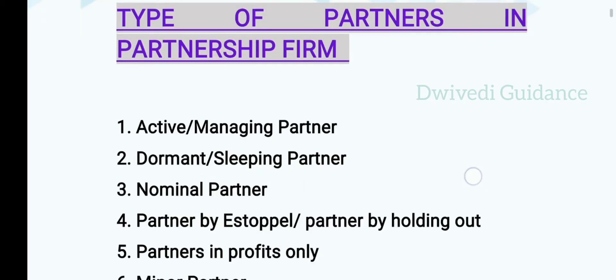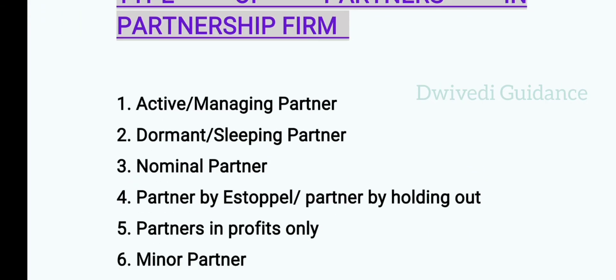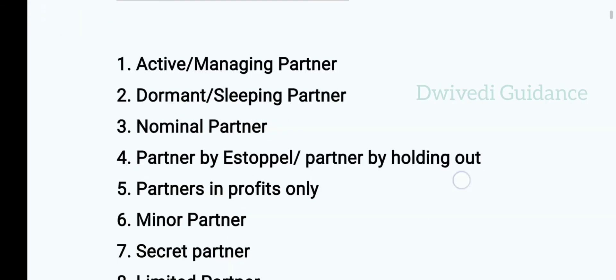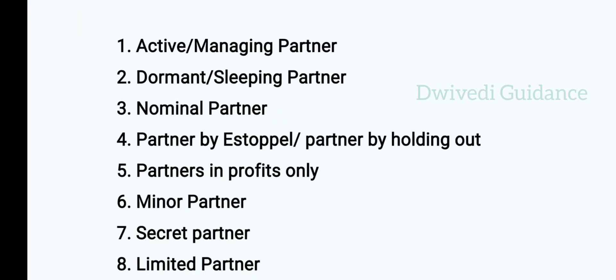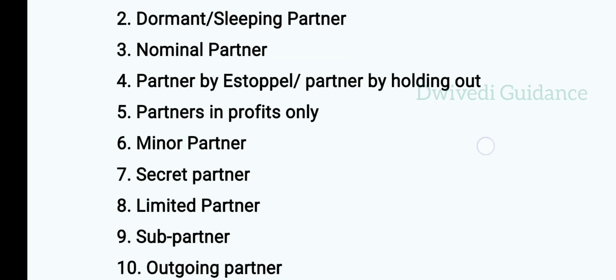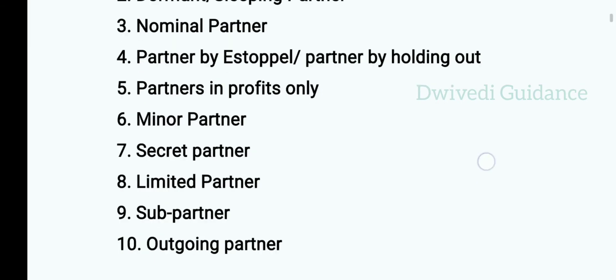First is active or managing partner, second is dormant or sleeping partner, third is nominal partner, fourth is partner by estoppel and partner by holding out, fifth is partner in profits only, sixth is minor partner, seventh is secret partner, eighth is limited partner, ninth is sub-partner, and tenth is outgoing partner.